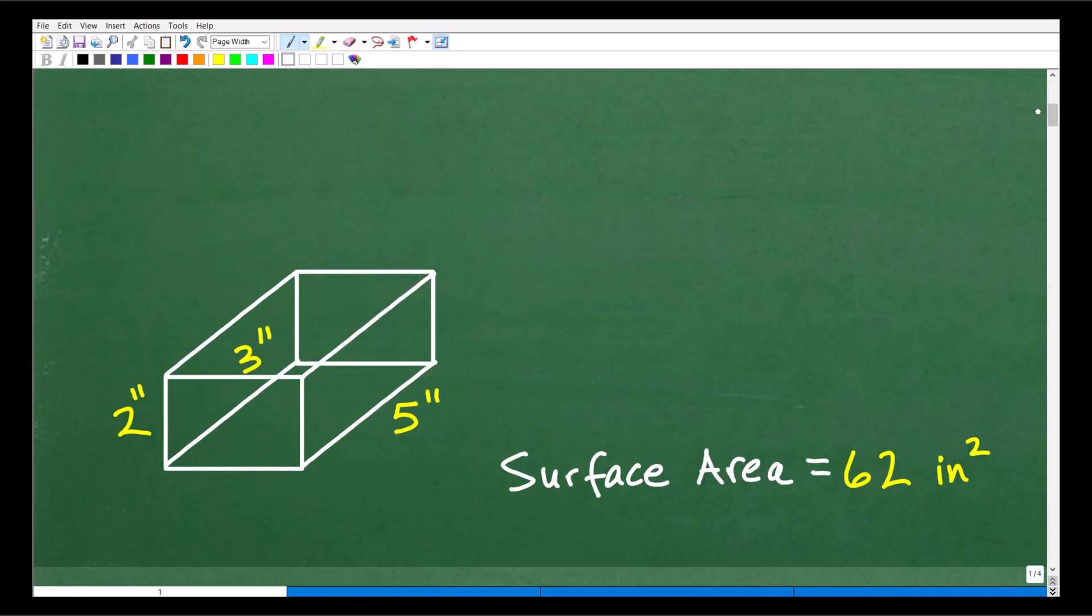And here you go. All right, so here is our rectangular box, basically like a shoebox. The surface area is 62 inches squared, okay?